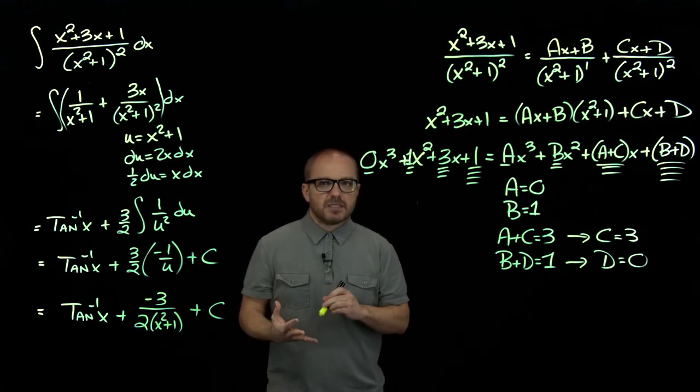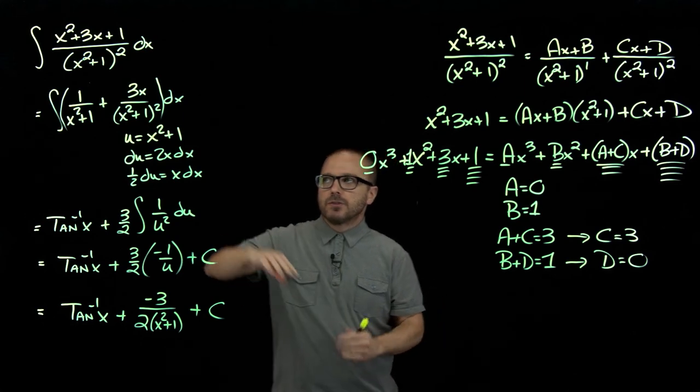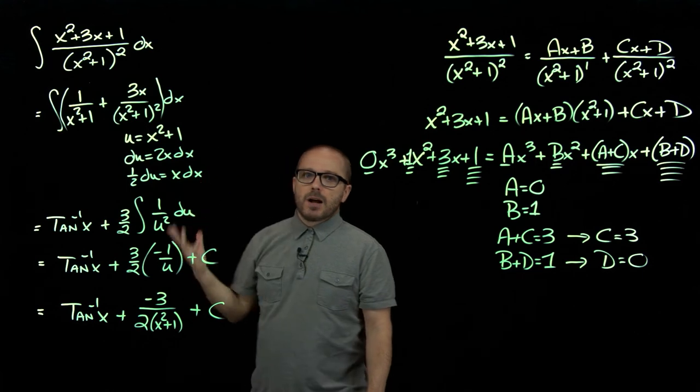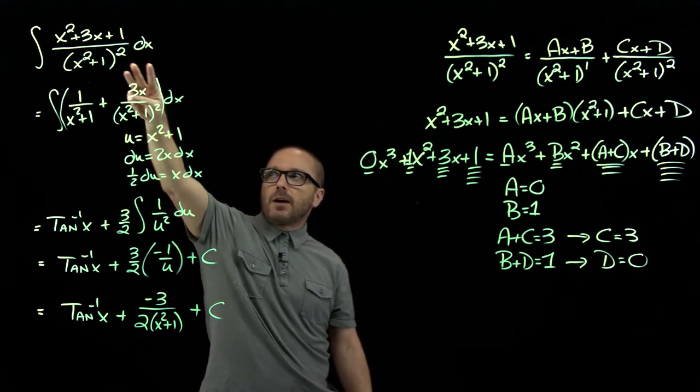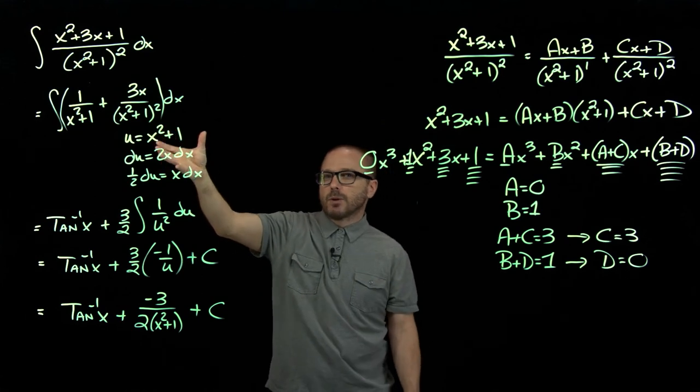So we've looked at linear stuff, quadratic stuff. You could keep going with this algebra approach. You can break up cubic stuff, fourth-degree stuff that's irreducible. The only problem for us is that, yeah, we could break it up, but then the integral we'd be left with, we don't know how to integrate anyways.